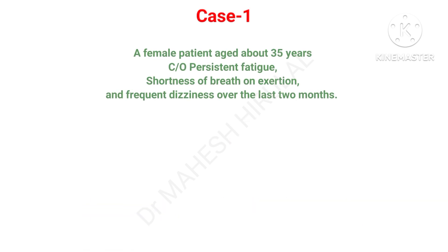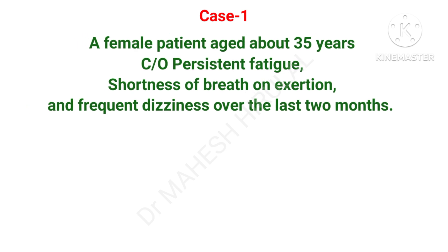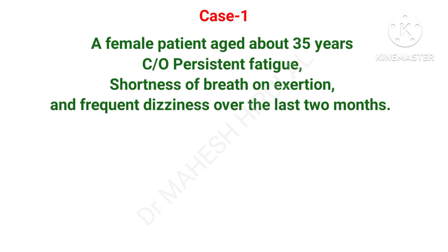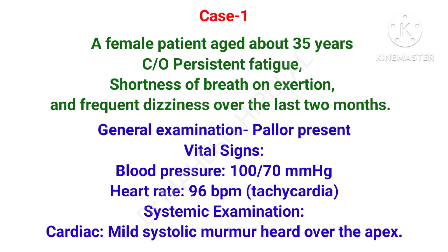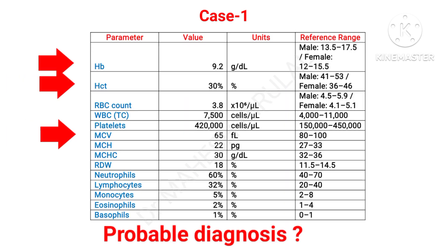A female patient aged about 35 years, complaining of persistent fatigue, shortness of breath on exertion, and frequent dizziness since 2 months. On general examination pallor is present, heart rate is 96 per minute, and a mild systolic murmur is heard on cardiac auscultation. CBC report shows reduced HB, reduced hematocrit, and reduced MCV. Guess the probable diagnosis.